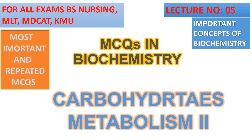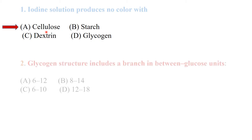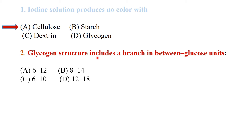The first MCQ: iodine solution produces no color with which option — cellulose, starch, dextrin, or glycogen? The best option is cellulose. With cellulose, iodine solution produces no color.